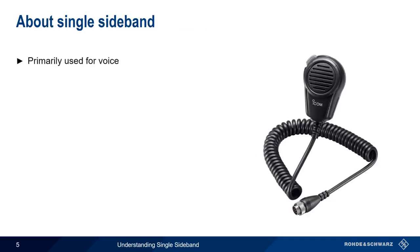The main application for single sideband is the transmission of voice, although data is also sometimes sent using single sideband. Sideband is also primarily used at HF, where spectral efficiency is very important, but can sometimes be found in the low VHF range as well.